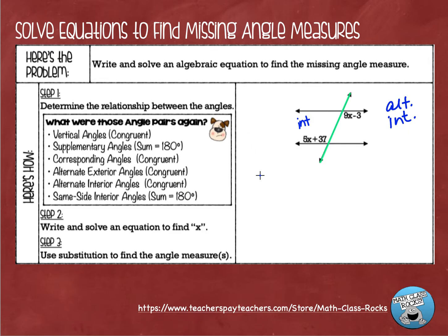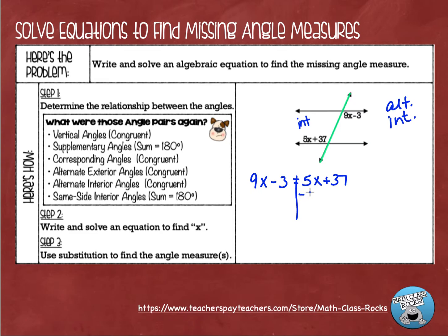When I write my equation, I'm going to say that 9x minus 3, which is my first expression, is equal to 5x plus 37. These two angles are going to be equal to each other. Now I'm going to solve my equation — let's get my variables on one side, so I'm going to subtract 5x.